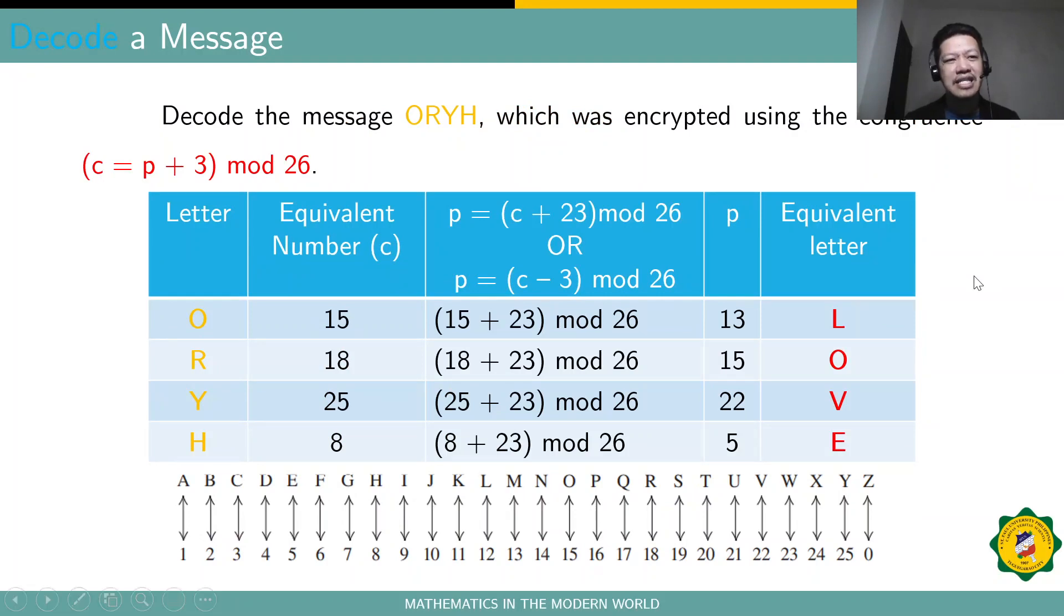Now, may we also discuss how to decode. So, we have actually the same example a while ago. So, this one is just the reverse of the process. Decoding the message O, R, Y, H, which we know from our example, which is actually encrypted using the modulo or congruence modulo C is congruent to P plus 3 modulo 26. So, first step is to actually get the equivalent number for these letters. So, O is actually 15, R is actually 18, Y is actually 25, and H is actually 8.